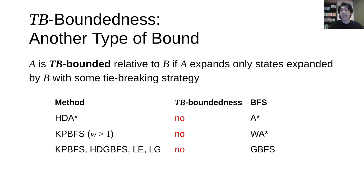In addition to T-boundedness, we propose another type of bound, TB-boundedness. A is TB-bounded relative to B if A expands only state expanded by B with some tie-breaking strategy. A is similar to B in that A never searches a region which B never searches. Parallel BFS methods in the table are not TB-bounded.